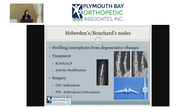Splinting can be tried but isn't that effective; activity modification as with any arthritis is also warranted. Surgery is not really aimed at removing the bumps because that doesn't help the pain from arthritis. Surgical treatment means fusion (arthrodesis) or joint replacement (arthroplasty). At the distal joints it's really just fusion, sacrificing motion for pain relief. At the PIP joints, depending on the digit, you could do either fusion or joint replacement.